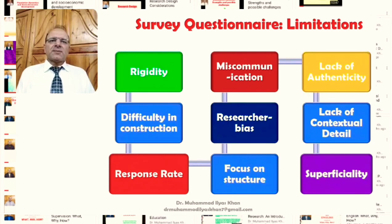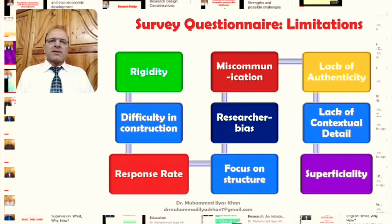Superficiality is another limitation. In questionnaires, it is difficult for the researcher to get into the detail of things, and it is almost impossible for the respondent to respond in detail. The respondent might want to provide context to their answers, but because they have limited space and limited choice, the level of detail required for certain questions is not possible in survey questionnaires. This can bring superficiality to the data obtained.